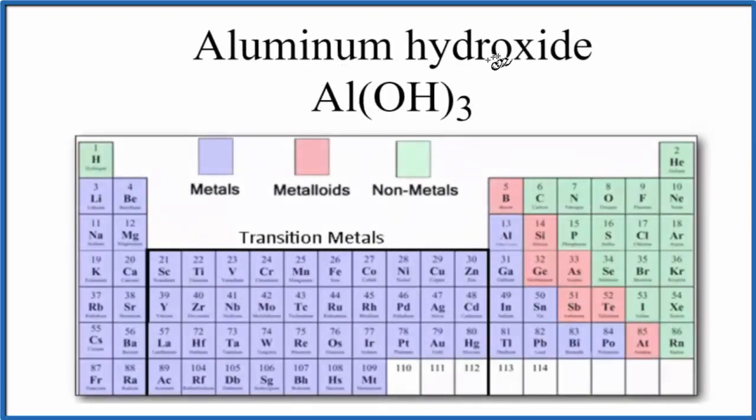In this video, we'll look at whether aluminum hydroxide, Al(OH)3, is ionic or covalent.